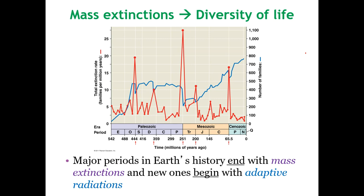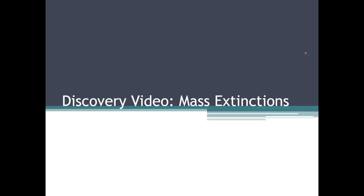I talked a little bit in the last lecture about mass extinctions. Just remember that there have been five major mass extinctions and we are currently in the sixth one. Basically every time we have a mass extinction — that's when the number of species just drops like crazy because our extinction rate shoots up — after that, there's a lot of space and a lot of resources around. So we'll typically see the exact opposite. We'll see like a cycle of extinction and then speciation, extinction and then speciation. So we'll see a lot of things die and then a lot of new things show up.